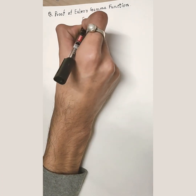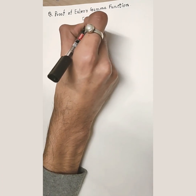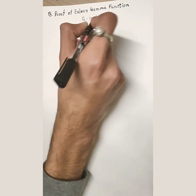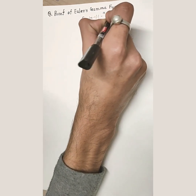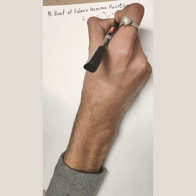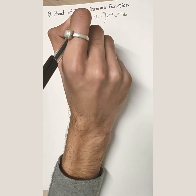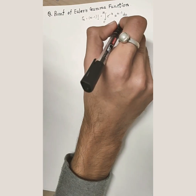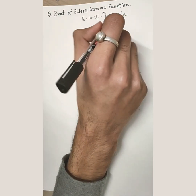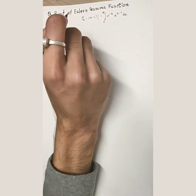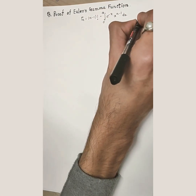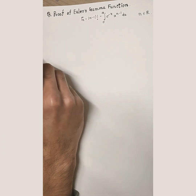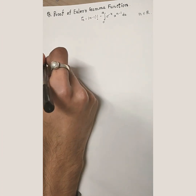Euler's gamma function: gamma(n) is nothing but (n−1) factorial, which is also written in integral form as the integral from 0 to infinity of e^(−x) · x^(n−1) dx, where n is any real number.